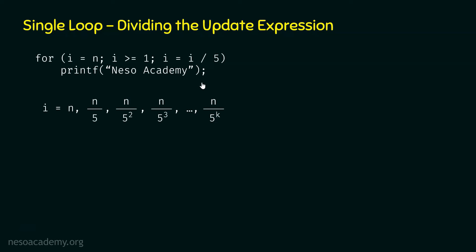Time complexity is always represented in terms of the size of the input, which is N. So we need to represent k in terms of N. We know N by 5 to the power k equals 1. Solving this equation: N by 5 to the power k equals 1 can be rewritten as 5 to the power k equals N, by multiplying both sides by 5 to the power k.